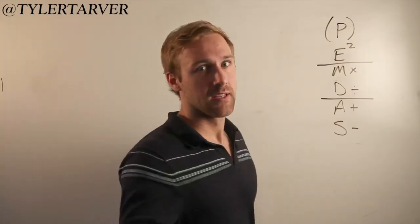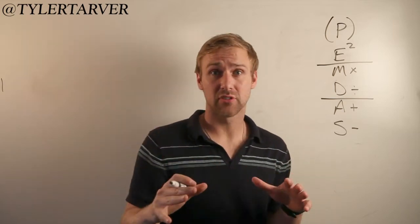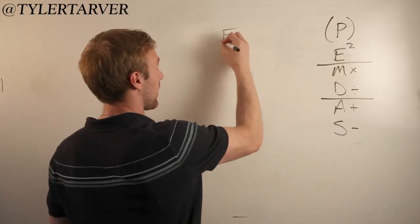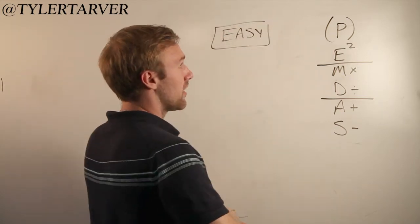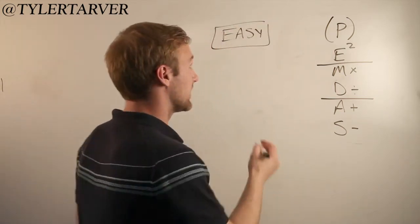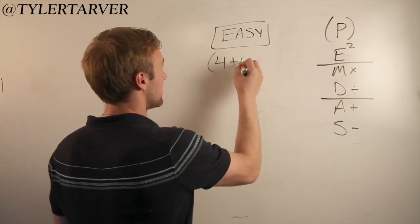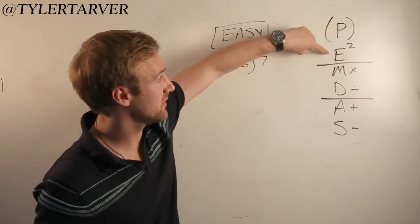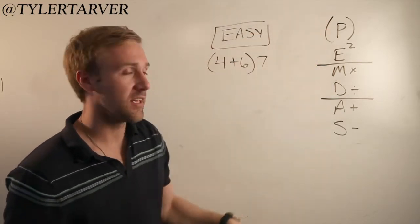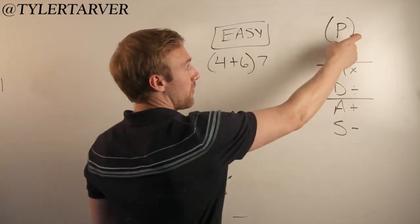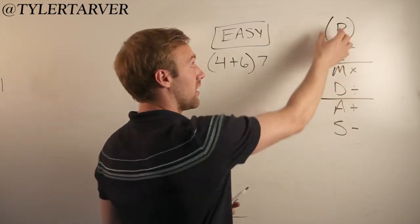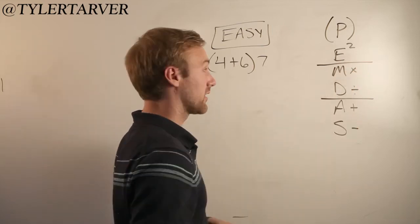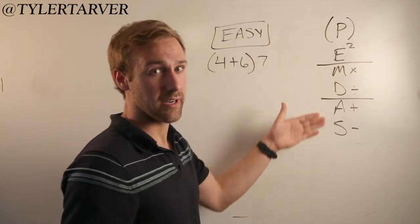What up? Tyler here, and I'm going to show you some examples on how to do the order of operations. We're going to start out with an easier one. So let's look at this — we've got (4 plus 6) times 7. We want to look at our order of operations. Remember: please excuse my dear Aunt Sally. The way I wrote it shows you what those things are: parentheses, exponents, multiply, divide, add, subtract.